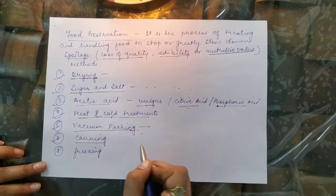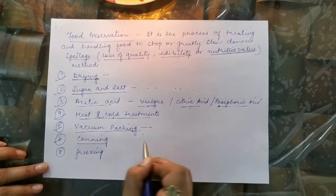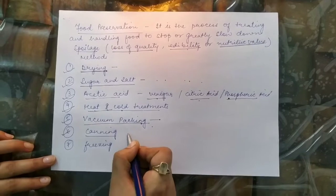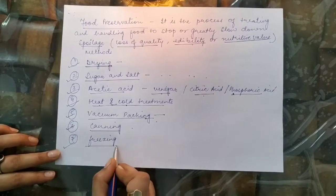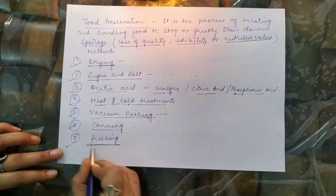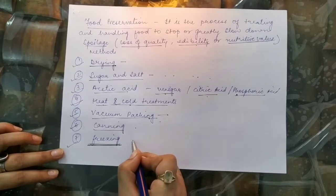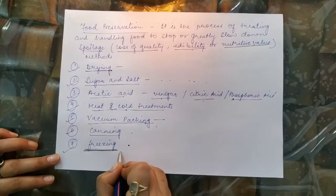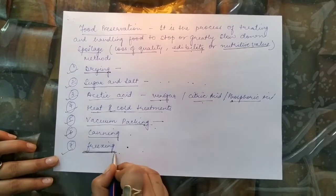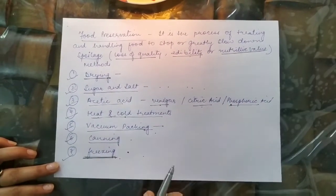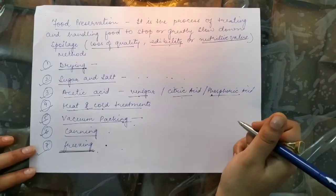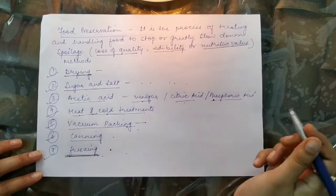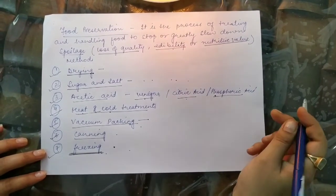Canning is another method — jams, jellies, and olives are packed in cans to prevent spoilage by microorganisms. The last method is freezing: storing food at very low temperatures. Meats, fruits, and dry fruits can be stored for a longer time by freezing. That's all for this chapter. We'll continue with the next chapter tomorrow. Students, post your comments or WhatsApp me personally for any queries.